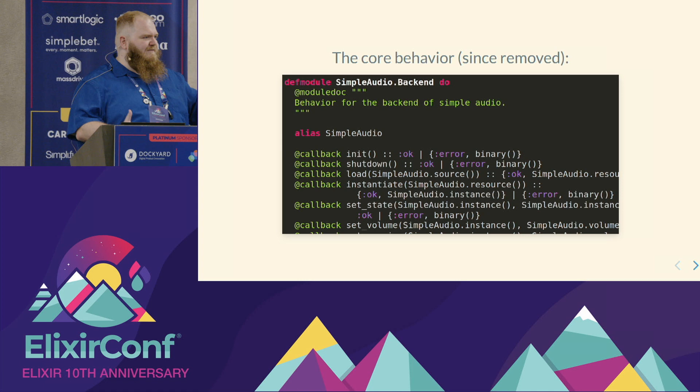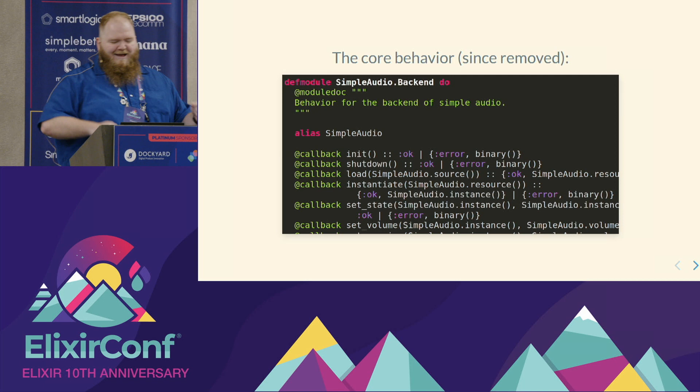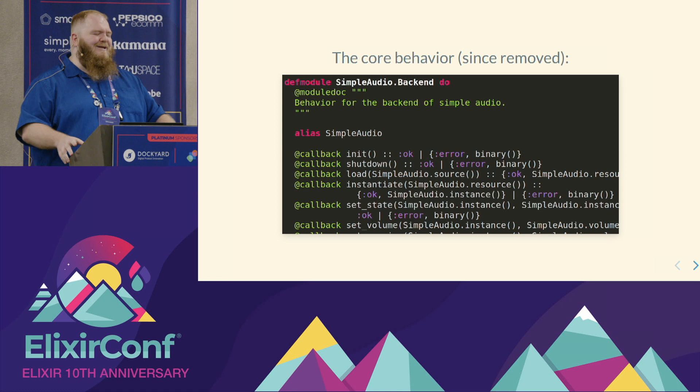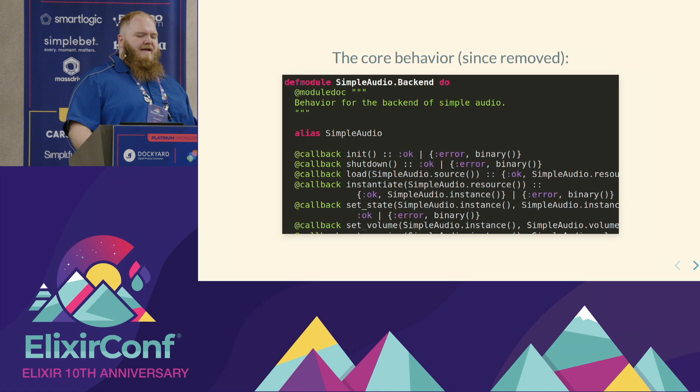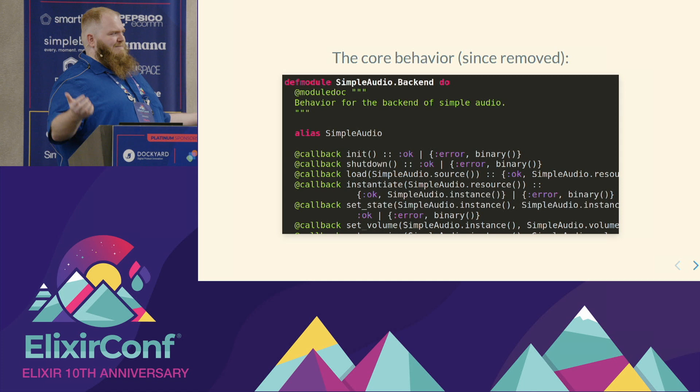Next, I initially thought it would be great to have a single simple audio module with pluggable backends — you could have multiple apps, configure them in a config file. Then I realized, Chris, you're overdoing it, dude. We just want to honk. So I threw away the behavior stuff and pluggable backends. The current version of Simple Audio on GitHub is one module and some Zig. If somebody more ambitious would like to add a Rustler backend instead of a Ziggler backend, knock yourself out — PRs accepted.